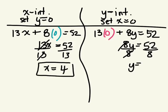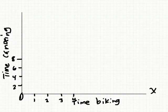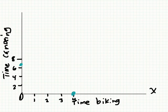X equals 4 hours, and Y equals 6.5 hours. That's one possible combination. So if I plot these two points on a graph, I have the X-intercept was 4 and the Y-intercept was 6.5. We connect these two points.